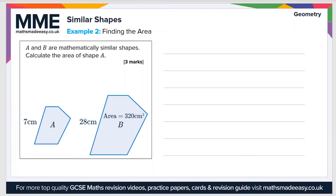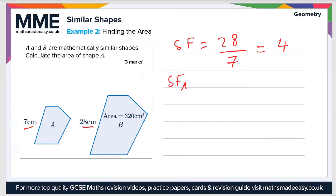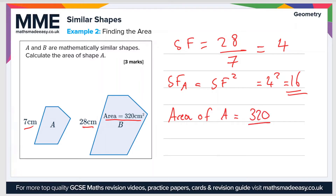Let's have a look at an example question. A and B are mathematically similar shapes — calculate the area of shape A. First, let's calculate the linear scale factor: 28 divided by 7, because those are corresponding side lengths, giving a scale factor of 4. The area scale factor, SFA, is the square of the linear scale factor, so 4 squared equals 16. To find the area of the smaller shape, we divide the area of the larger shape by the area scale factor: 320 divided by 16 equals 20 centimetres squared.